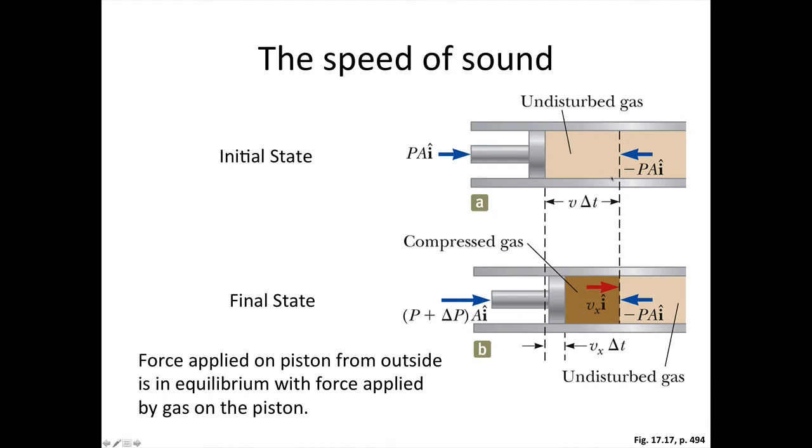So we start with our undisturbed gas here. A stands for this cross-sectional area. And then what we're going to do is we're going to compress the gas. So we apply an additional force, delta P A, on the gas here. So that causes these gas molecules inside to all start moving with the speed Vx in this I direction here.